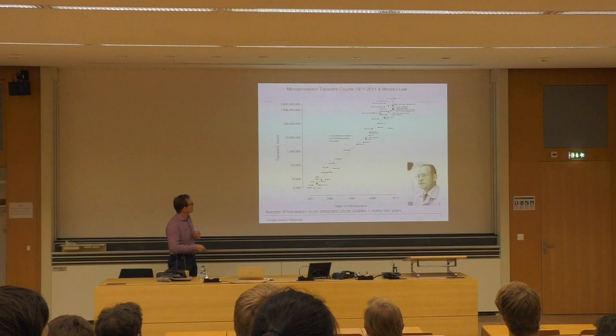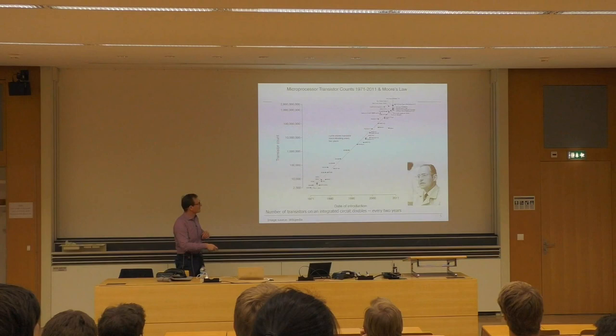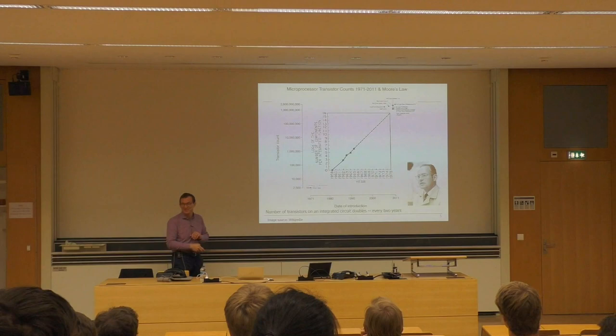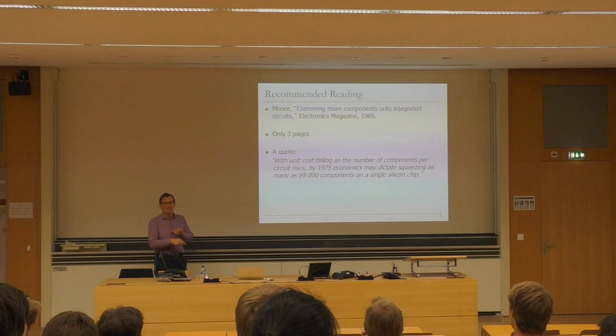Now we can see chips that are huge. The biggest GPU is 21 billion transistors, which doesn't even fit on this graph. This is already an old graph, but the fit is really good to the curve. Moore's paper is my recommended reading — it's only three pages. By 1975, economics may dictate squeezing as many as 65,000 components on a single silicon chip. We're well beyond 65,000 now.